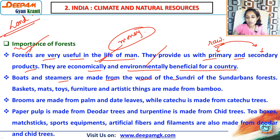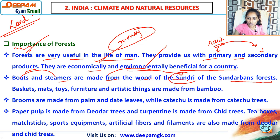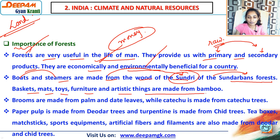Environmentally, forests help bring rainfall, control pollution, and more. Boats and steamers are made from the wood of the Sundari tree found in the Sundarbans forest. Basket, mats, toys, furniture, and artistic things are made from bamboo — things we use in day-to-day life, even at home.